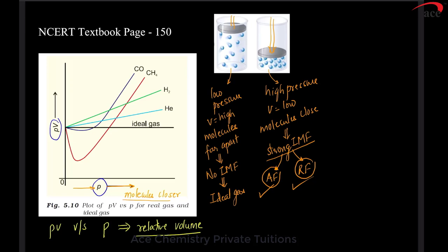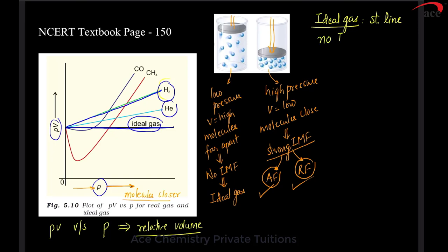Now looking at this graph, for hydrogen and helium the line is a straight line but it is above the ideal gas line. Why is the ideal gas line a straight line parallel to the x-axis? Because ideal gases have no intermolecular forces, so their relative volume remains the same throughout.